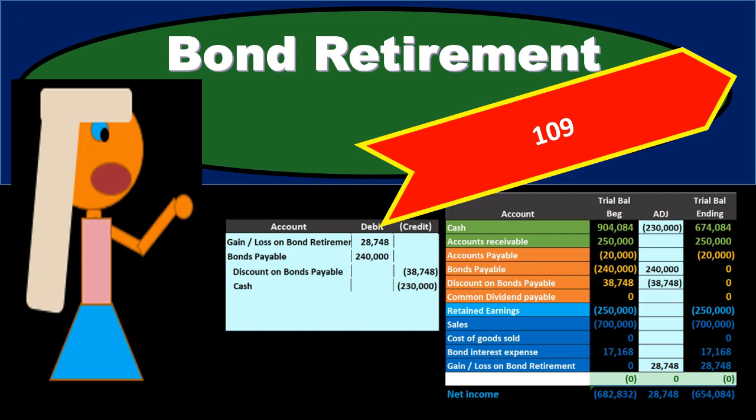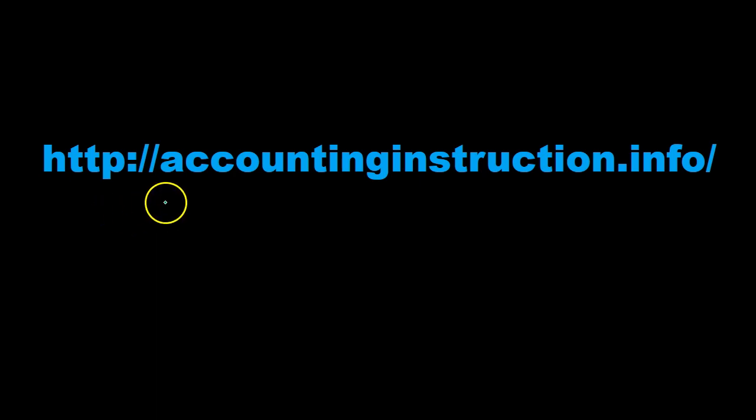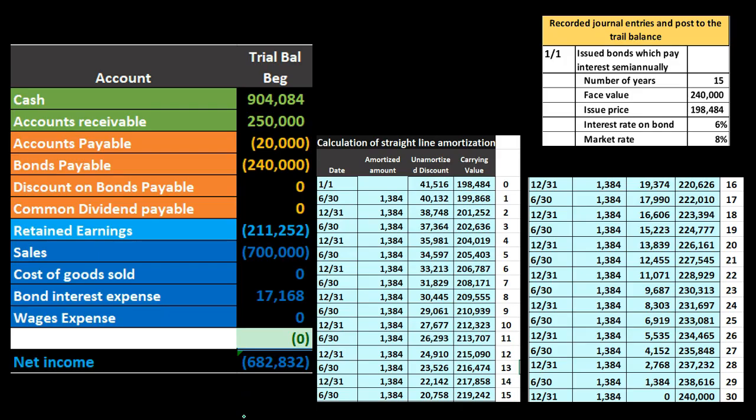In this presentation we will discuss the journal entries related to the retirement of bonds. Retirement of bonds just means that we're going to pay off the bonds in some form or another, meaning the bonds are going to go away. Typically that'll happen at the maturity date at the end of the bond.